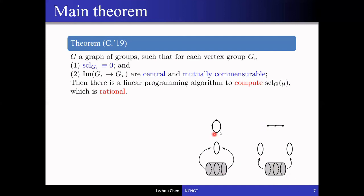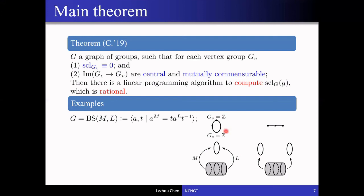In the case of a single edge with one vertex, this gives the HNN extension. More concretely, if the vertex and edge group are both Z with inclusions given by multiplication by m and l, the group obtained is called the Baumslag-Solitar group with parameters m and l. It has a nice presentation with a single relation and shows up frequently in geometric group theory — for example, any group containing a Baumslag-Solitar group as a subgroup cannot be hyperbolic.